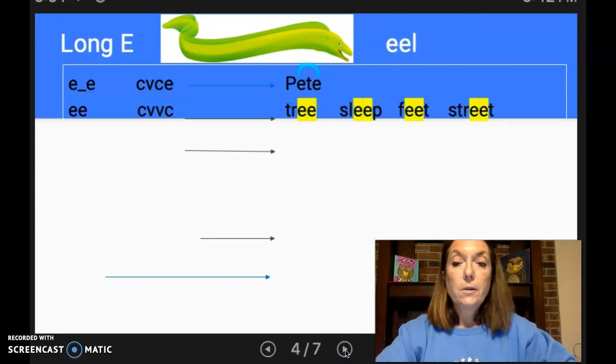Two E's together, which can be in the middle of the word. And as you see in tree, it's at the end of the word too. But two E's together will always say the long E sound. Tree, sleep, feet, street.